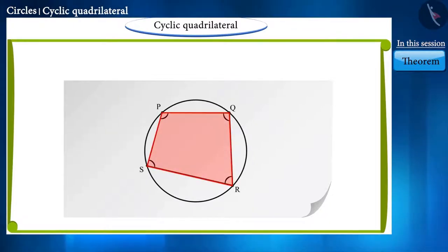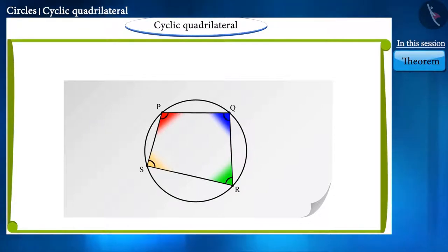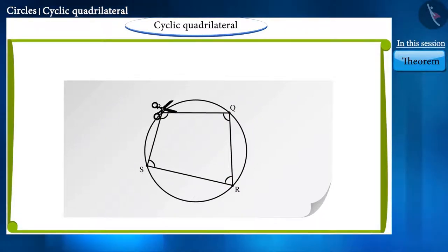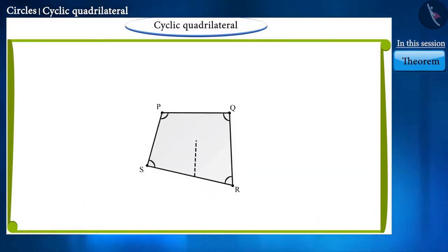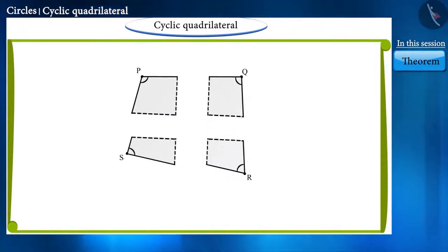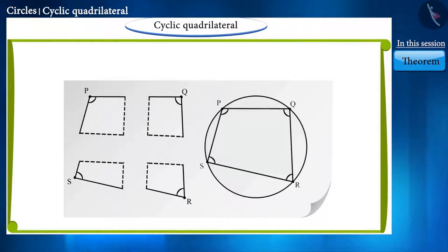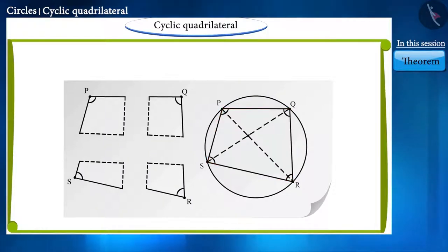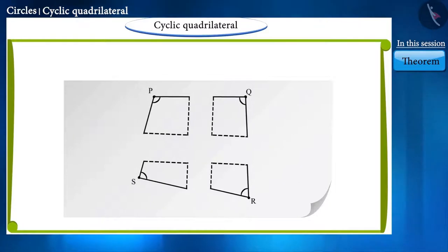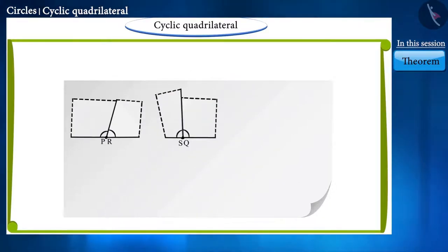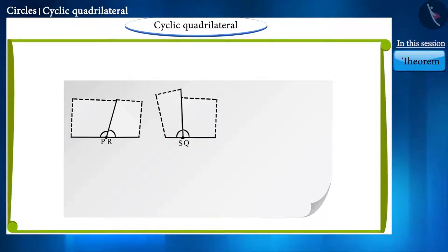Join these points to obtain a cyclic quadrilateral PQRS. Now to understand the relationship between the angles, we will separate the quadrilateral PQRS from the circle with the help of scissors. We cut it into four parts. Friends, we have to determine the relationship between angles, so we did not cut the quadrilateral PQRS diagonally.